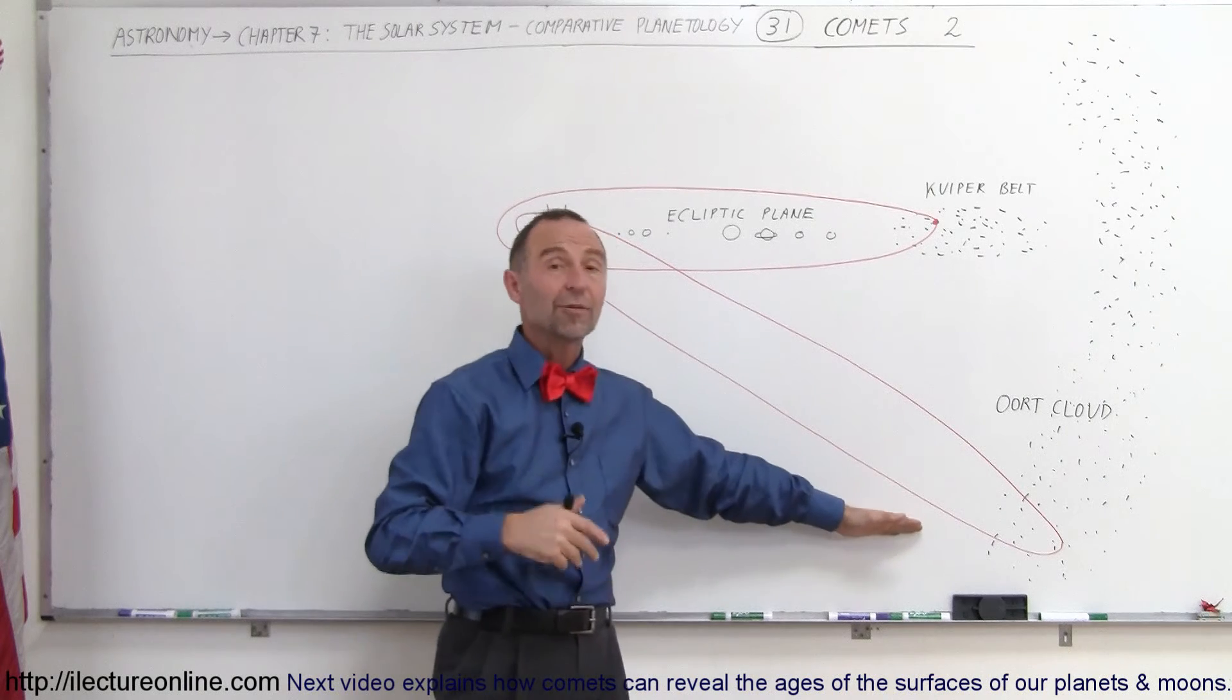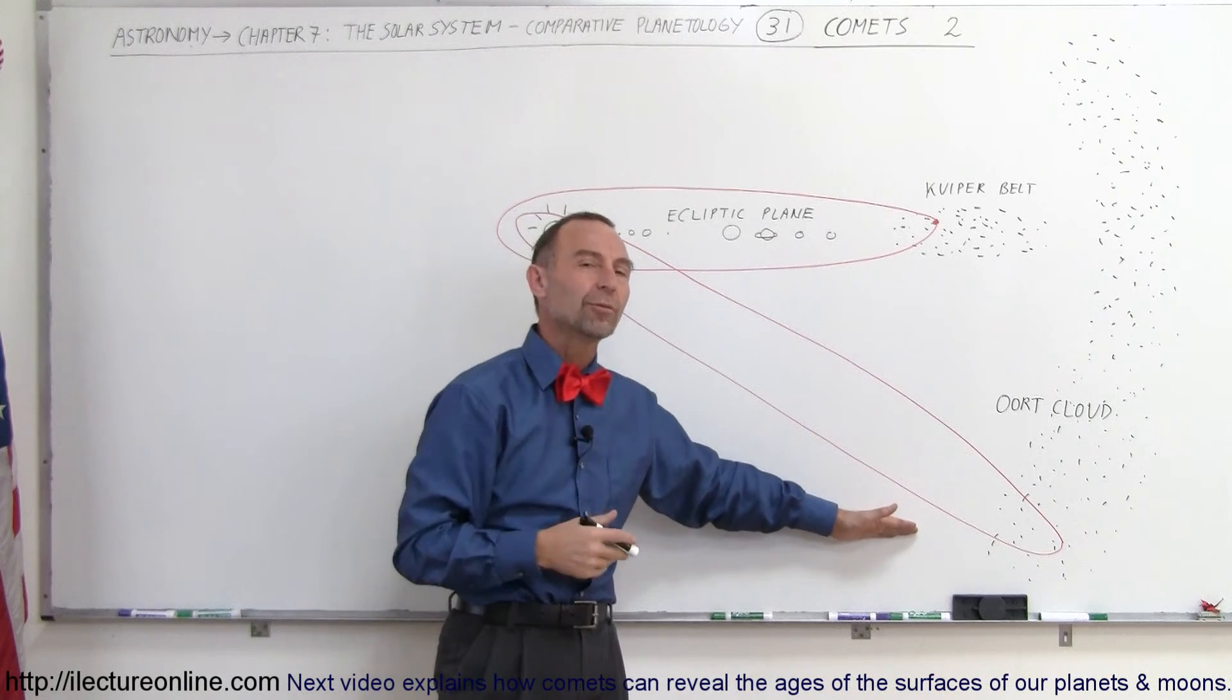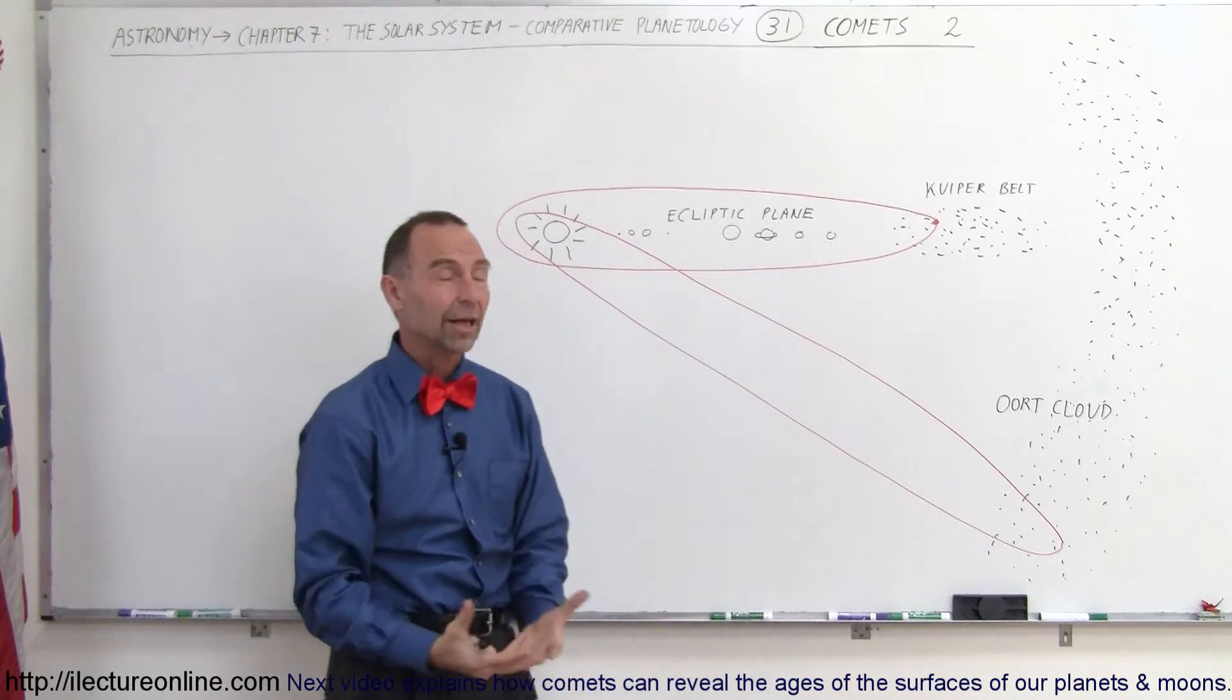Why do we know it's spherical? Because they can come in from any angle, and we have seen them come in from so many different angles that we know that it must be spherical out there.